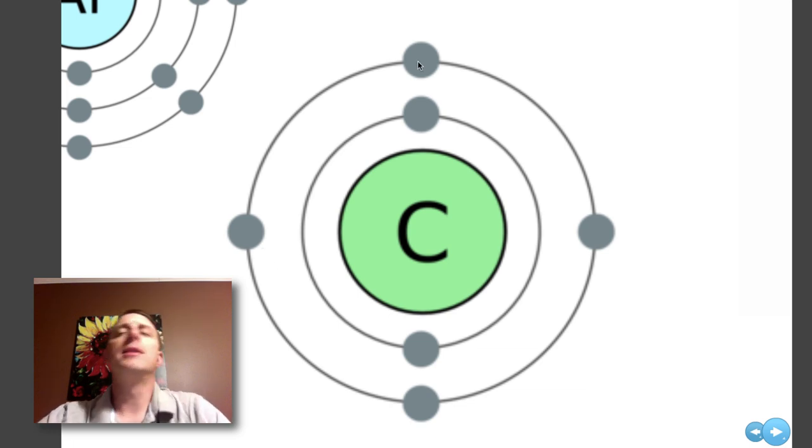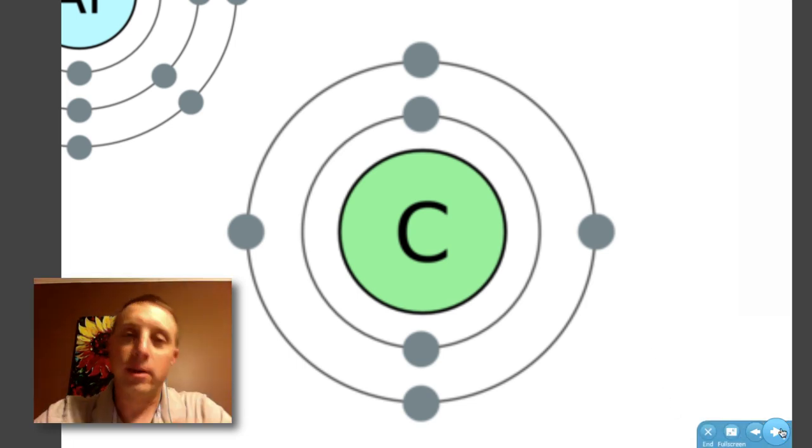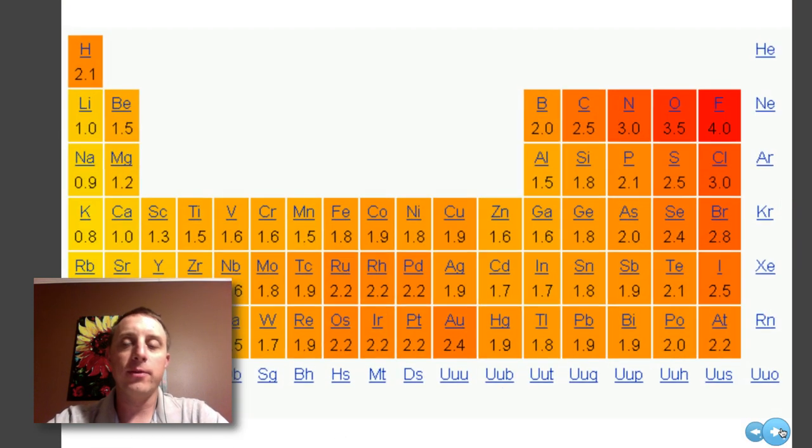The reason that these atoms, these elements will react is because they are moving towards a stable state. That stable state is a full outer shell. The way that they do this is they enter into chemical bonds. There are two different types of chemical bonds.